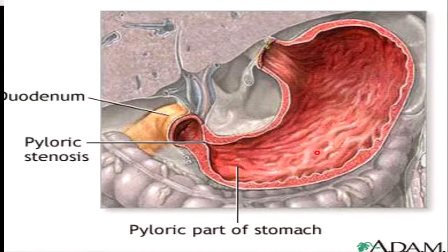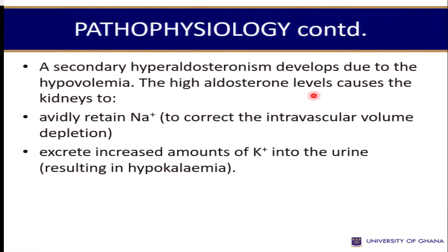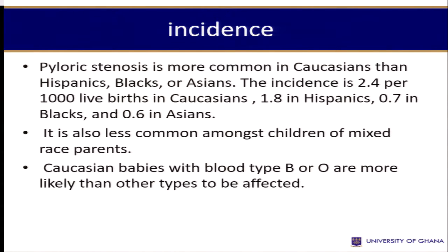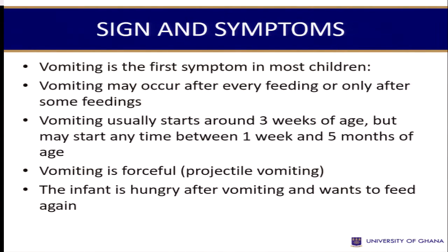Everything that the child takes stays in the stomach and the child vomits with a projectile type of vomiting. More male children are affected than females and there is some genetic predisposition. What you see is that the child is not able to feed well and the abdomen is distended.